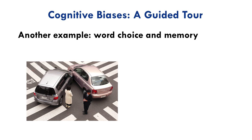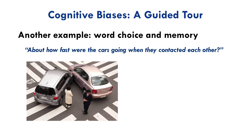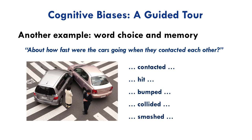Here's a version of a famous experiment. Subjects are asked to watch a video of a car accident at an intersection. Afterward they're asked questions about what they saw. One question asks how fast were the cars going when they contacted each other. But for some subjects a different word was used — hit, bumped, crashed, collided, or smashed — and they're asked to write down a number for how fast they thought the cars were going.